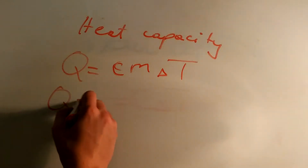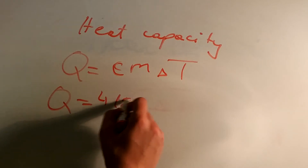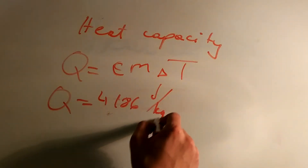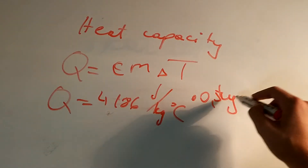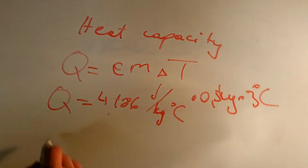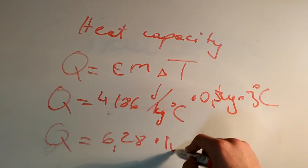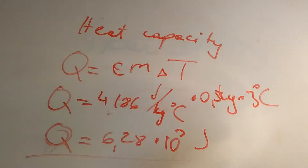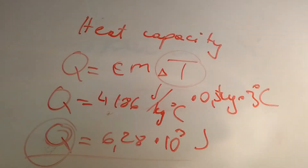For water we have 0.5 kilograms. The specific heat capacity of water is 4186 joules per kilogram per degree Celsius, times 0.5 kilograms, times 3 degrees Celsius, and we get 6.28 × 10³ joules. Since we're increasing the temperature, ΔT is positive and the heat Q is positive, meaning we're adding energy to that system.